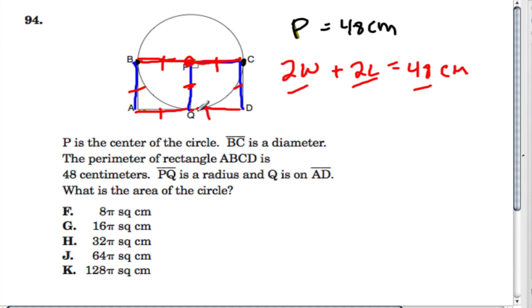...the red, let's say, represents the width, and let's say that the blue represents the length. Notice if they're all equal and the width is two of these lines and the length is one, that means that the width is twice as long as the length.